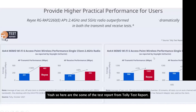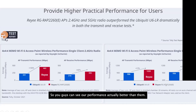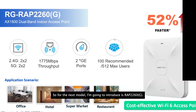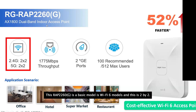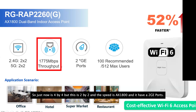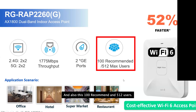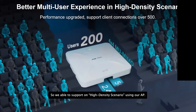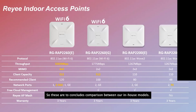We have a third-party Tolly test report showing our 2260E performs better than competitors on the 2.4 GHz radio band. The 2260G is the basic Wi-Fi 6 model for the 2260 series — it is a 2x2 configuration with AX1800 speed, two gigabit ports, and supports up to 100 recommended users for high-density scenarios.